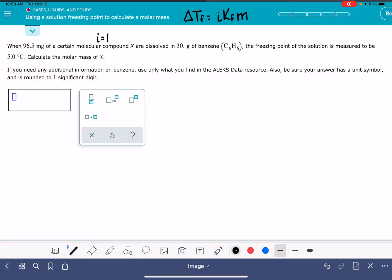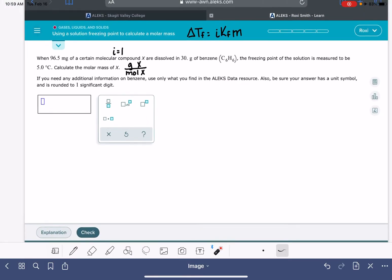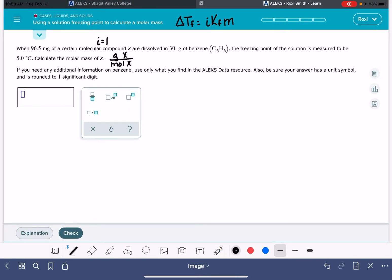Calculate the molar mass of X. The molar mass of X is going to be the grams of X divided by the moles of X. The problem is giving us the grams of X, 96.5 milligrams, so we just need to figure out how many moles we have. Now it's saying if you need any additional information on benzene, use only what you can find in the ALEKS data resource. The ALEKS data resource is information that you get by clicking on that little bar graph symbol. It's going to pull up your data and formulas.